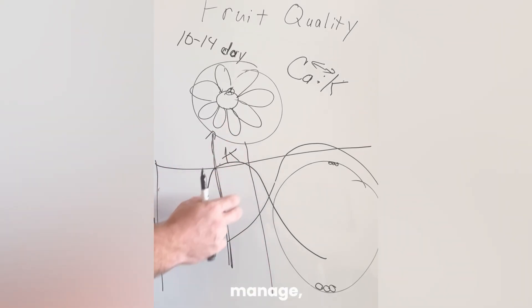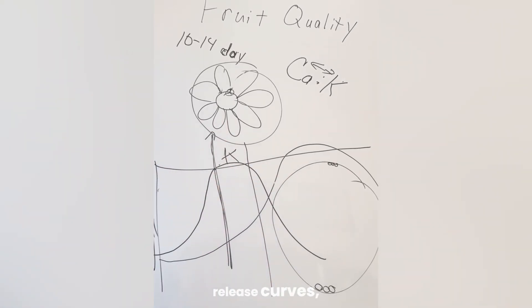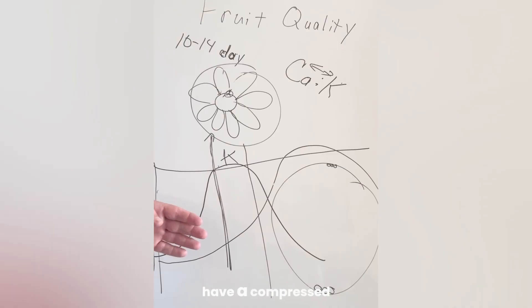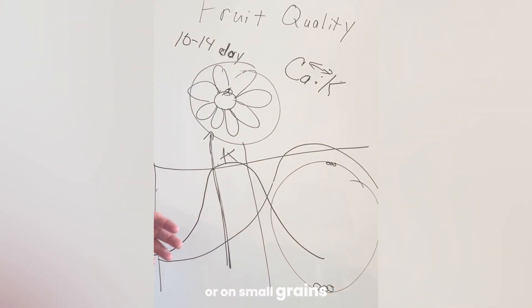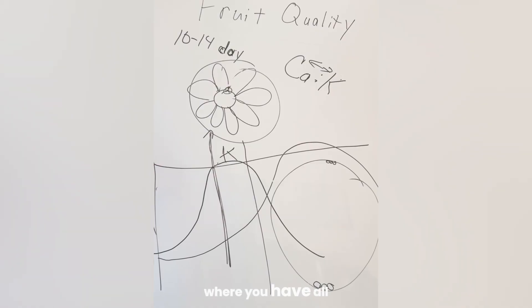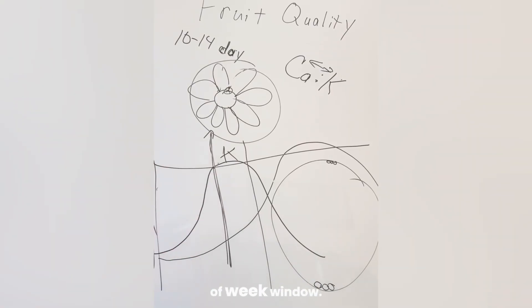This is relatively easy to manage these nutrient release curves on crops where you have a compressed flowering and pollination window. On tree fruit, for example, or on small grains crops or grains crops where you have all the blossoming and pollination happening within a couple week window.